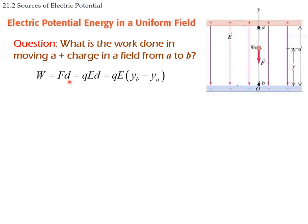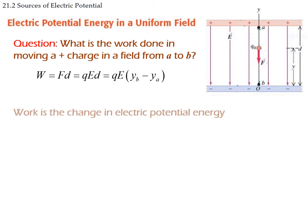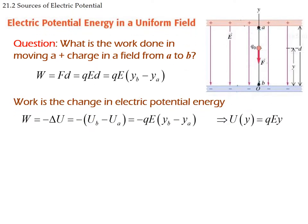The force is the charge times the field, times the distance. The distance is the final height minus the original height — the height of point B minus the height of point A. The change in electric potential energy equals the work, with the sign indicating who is doing the work. It equals the final potential energy minus the initial potential energy, so the potential energy can be expressed as charge times field times height.